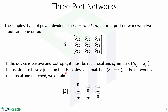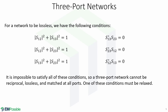In this case, it is desired to have a junction that is lossless and matched, where Sij equals zero. If the network is reciprocal and matched, we obtain this matrix. For a network to be lossless, we need to have the following conditions — these six expressions. However, it is impossible to satisfy all of these conditions, so a three-port network cannot be reciprocal, lossless, and matched at all ports.